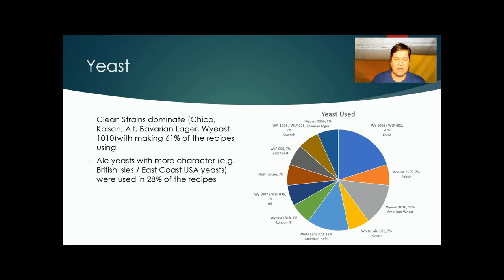On the yeast, the clean strains tended to dominate. Chico at 20%, two Kolsch strains, an old strain Bavarian, even a lager strain was used. White yeast 1010 was used in two recipes. Yeast with more character, like all the British Isle strains or the East Coast USA ale strain were used in 28% of the recipes, but these are majority old recipes in the early 2000s. As the hop character has taken over more and more for these styles, you're seeing more clean strains used.